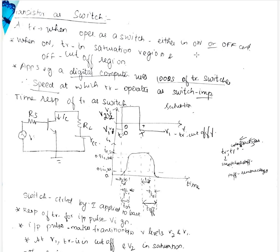A transistor when operating as a switch acts as either on or off. When on, it is in saturation region where both junctions are forward biased. When off, it is in cutoff region where both the junctions, emitter base and collector base, are reverse biased.